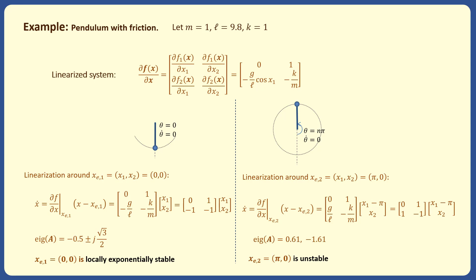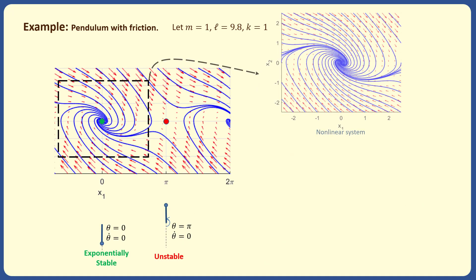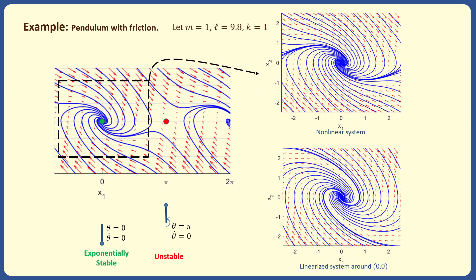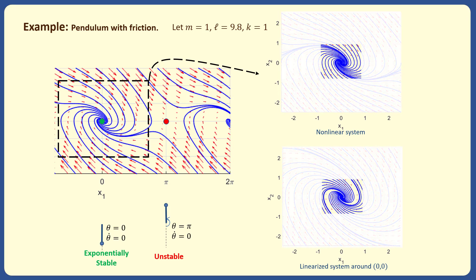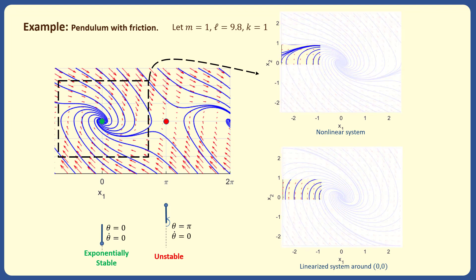We now plot the phase portrait of the original nonlinear system and compare it with the phase portrait of the linearized system around the origin. It can be observed that the phase portraits are similar around the origin. However, they are different at points which are not close to the origin. This is because the linearized system is an approximation of the system around the origin, and therefore, it can only represent the original system around the origin.